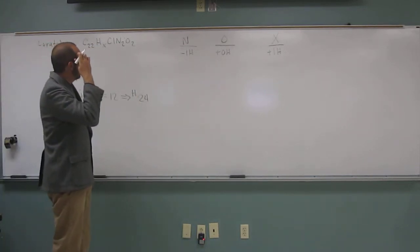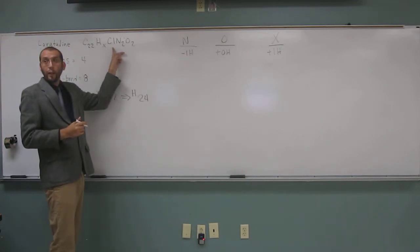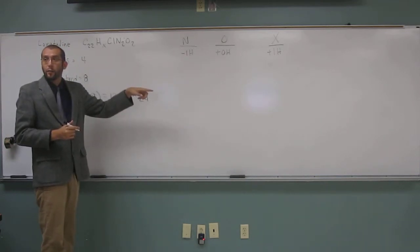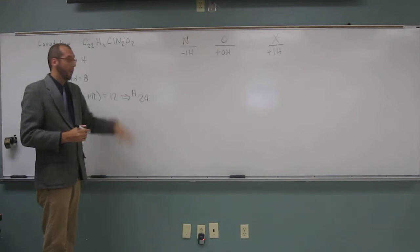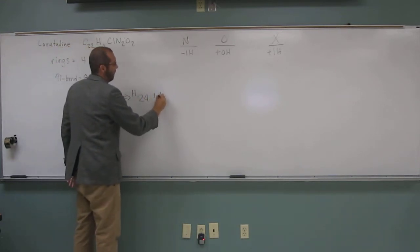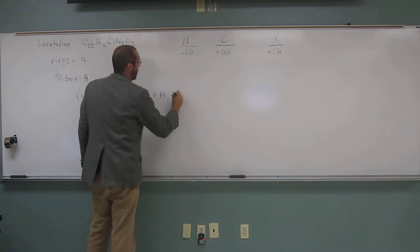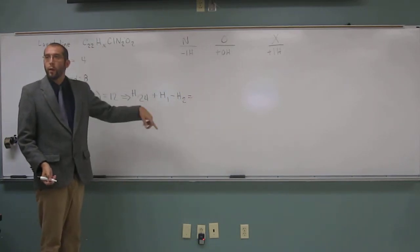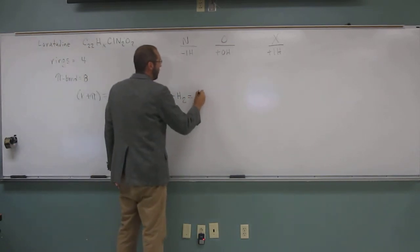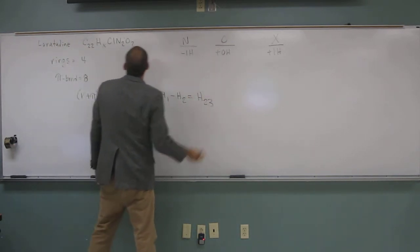So what did we say? For every fluorine we're going to add a hydrogen, right? And for every nitrogen we're going to subtract two. So plus one hydrogen, and then minus two hydrogens. So that gives us 23 hydrogens, right? And that's the answer.